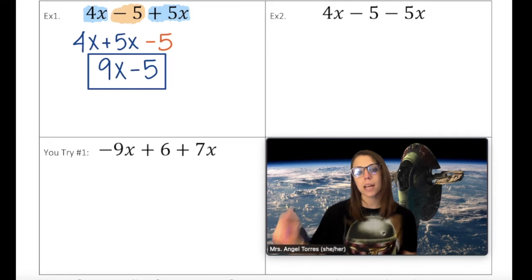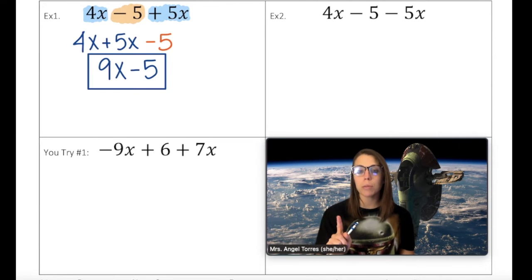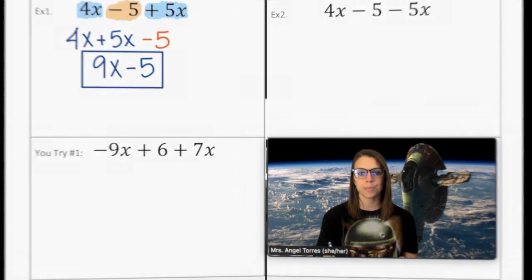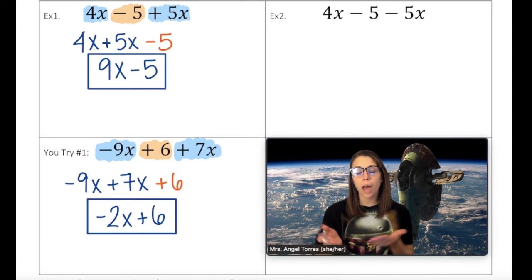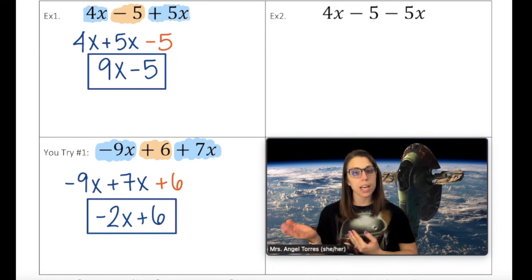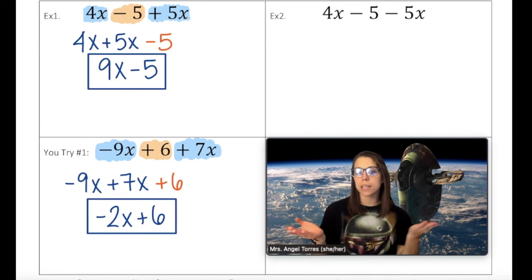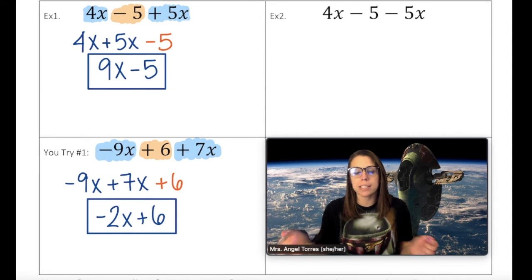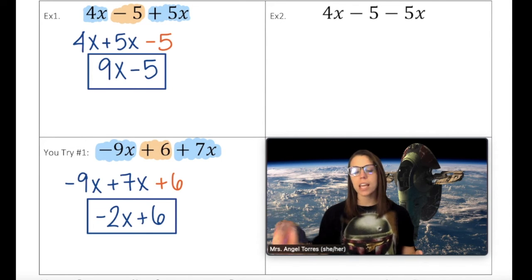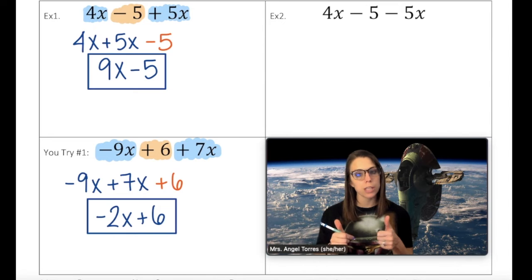Go ahead and attempt the practice problem. Remember, you want one variable term and one constant. How did you do? I was able to combine negative 9x with positive 7x into a single term of negative 2x, and my constant is not affected. So if you have negative 2x plus 6 — great job!